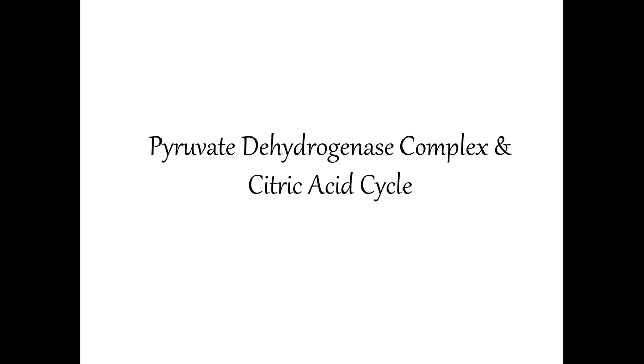Last time we finished glycolysis. The three main products we got out of glycolysis were two net ATPs, two NADHs produced, and most importantly for today's lecture, two pyruvate molecules, which is where all the carbons from glucose went. Glucose started with six carbons; each pyruvate has three carbons.